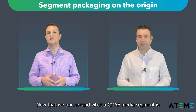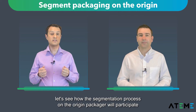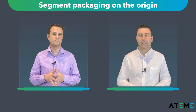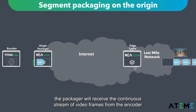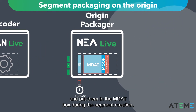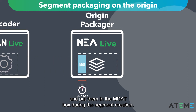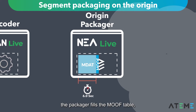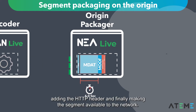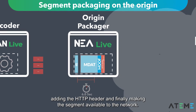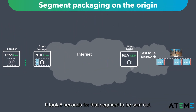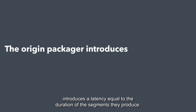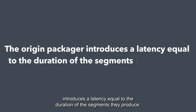Now that we understand what the CMAF media segment is, let's see how the segment process on the origin packager will participate in this 28 seconds latency. The packager will receive the continuous stream of video frames from the encoder and put them in the mdat box during segment creation. Once all 6 seconds of content is available, the packager fills the moov table, adds the HTTP header, and finally makes the segment available to the network. So it took 6 seconds for that segment to be sent out. More generally, the origin packager introduces a latency equal to the duration of the segments it produces.